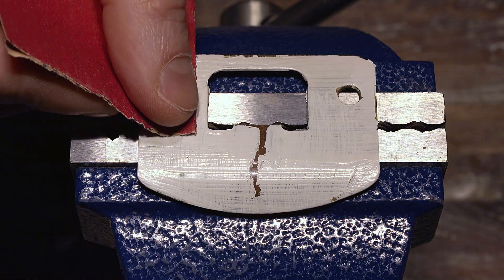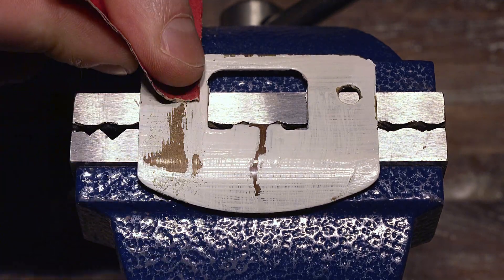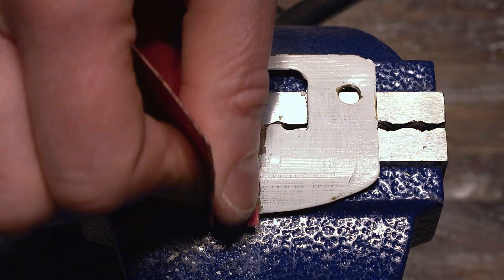I sanded the strike plates first with 220 grit to clean them up, and then later with 320 grit to get the satin finish.